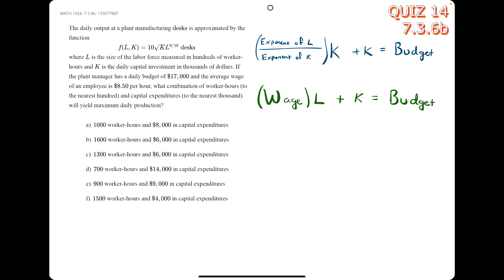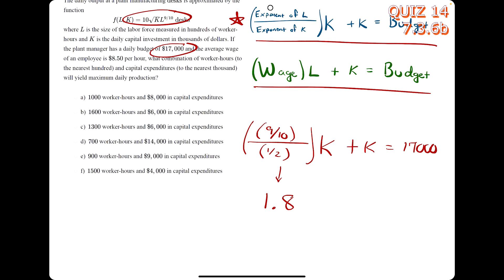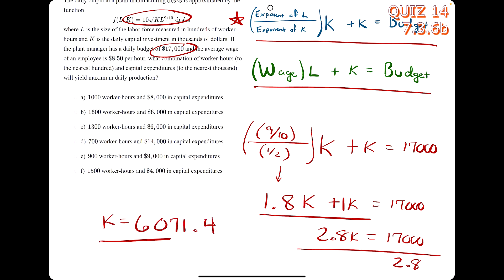In this problem, we usually only need the first equation. We look at the function for the exponents of l and k: the exponent of l is nine-tenths, and since k is under a square root, k's exponent is one-half. We multiply this result by k, add k, and set it equal to the budget of 17,000. Nine-tenths divided by one-half is 1.8, so 1.8k + k = 2.8k = 17,000, giving us k = 6,071.4, which rounds to about 6,000 for capital expenditure.